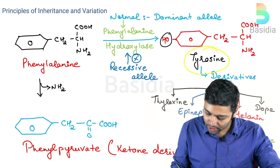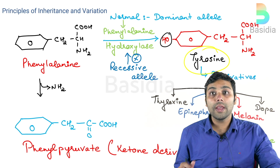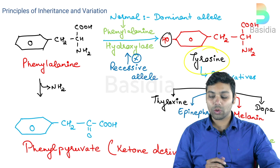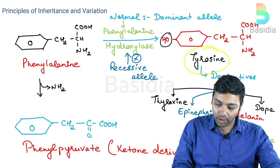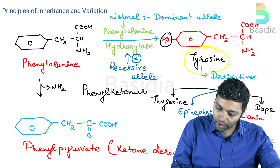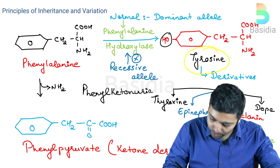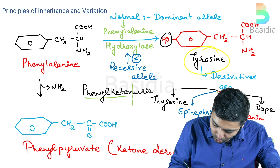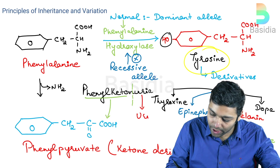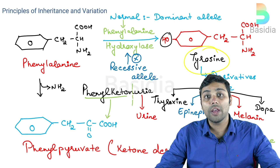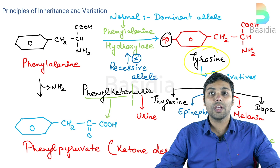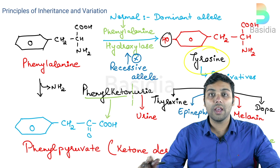Because phenylpyruvate cannot be stored in our body, it is released out through urine. This gives the name to the disorder: phenylketonuria. Breaking it into two parts — phenylketone refers to this ketone molecule, and uria means urine. The release of the phenylketone derivative in urine gives the term phenylketonuria. This is a metabolic disorder arising as a result of recessive mutations in a normal allele.